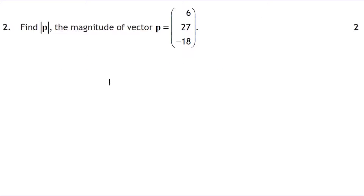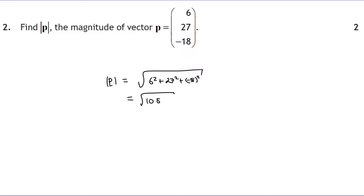Question two: we're looking for the magnitude of a vector given in component form. It's the square root of 6 squared plus 27 squared plus negative 18 squared. Putting that into a calculator gives us the square root of 1089, which is 33.